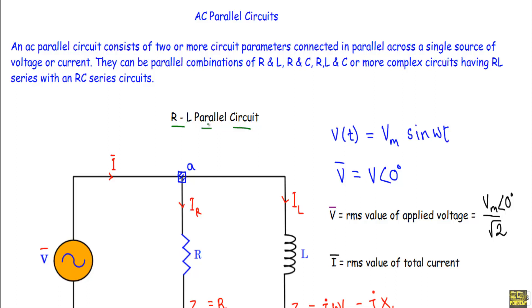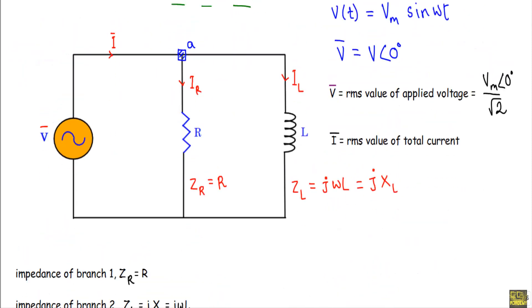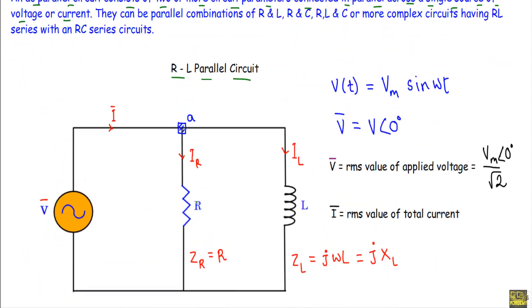As you are familiar with parallel circuits, here I will talk about AC parallel circuits. An AC parallel circuit consists of two or more circuit parameters connected in parallel across a single source of voltage or current. In this circuit, one end of resistance R and one end of inductance L are connected at one point, and the other ends are connected at another point. Therefore, this R and L are connected in parallel — this is an RL parallel circuit.